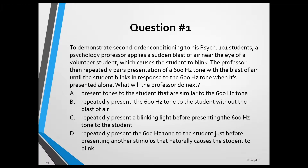Let's take a look at a few questions that cover the topics I have just summarized. To demonstrate second-order conditioning to psych 101 students, a psychology professor applies a sudden blast of air near the eye of a volunteer student, which causes the student to blink. The professor then repeatedly pairs presentation of a 600 Hertz tone with the blast of air until the student blinks in response to the 600 Hertz tone when it's presented alone.